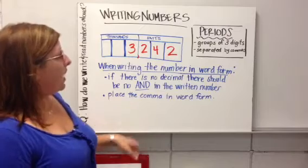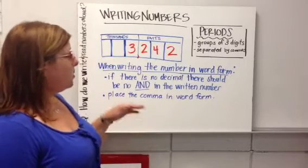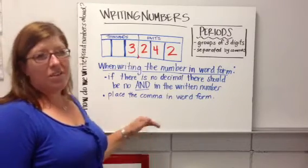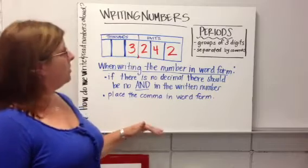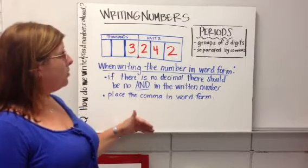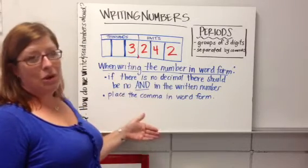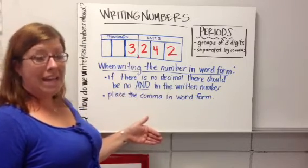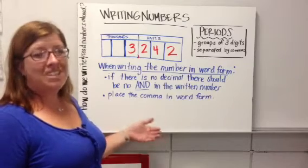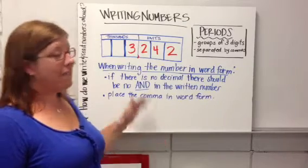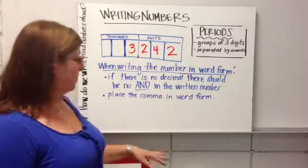When writing the number in word form, if there is no decimal, there should be no 'and' in the written number. A lot of people want to say 'three and two hundred forty-two,' but that's not right. There should be no 'and' if it is a whole number and not a decimal.